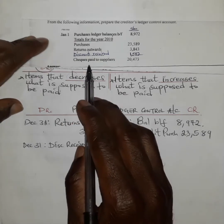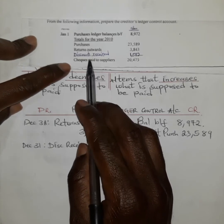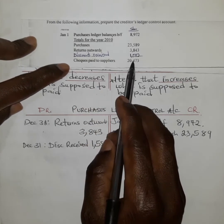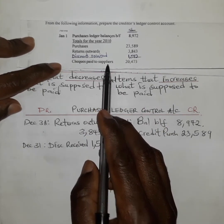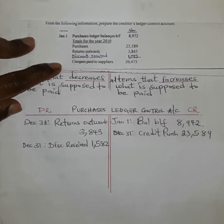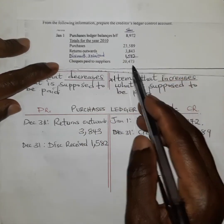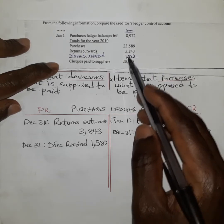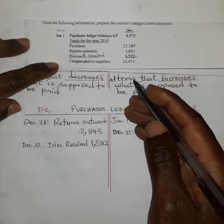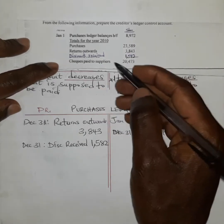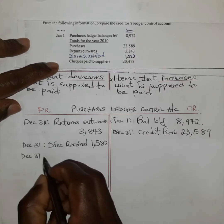Lastly, we have checks paid to suppliers. Checks paid to suppliers means this business owed the supplier some amount and when they pay, it reduces what they are supposed to pay — so the next payment will be less. Therefore we debit with that amount, recorded on December 31st.